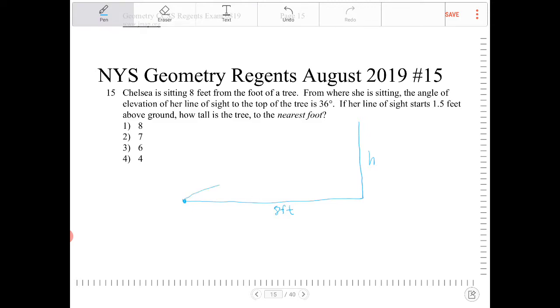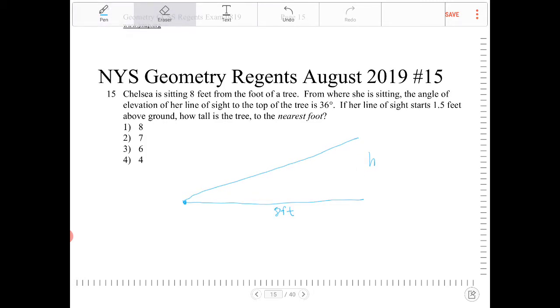From Chelsea's line of sight to the top of the tree, that is going to be 36 inches—or 36 degrees, rather. So this is 36 degrees.